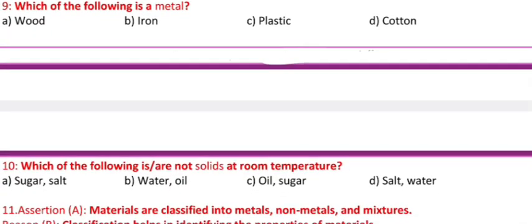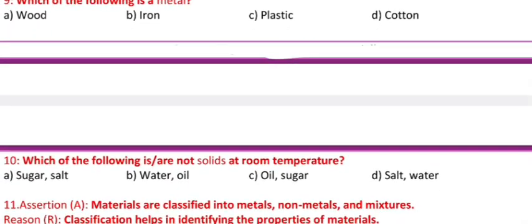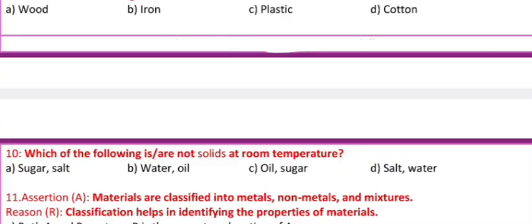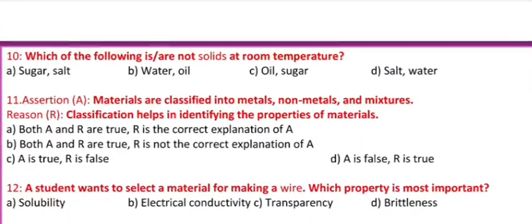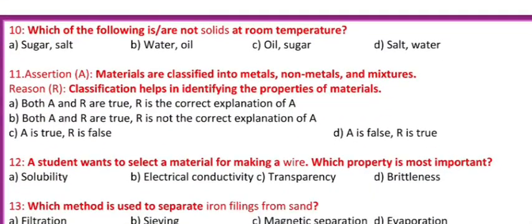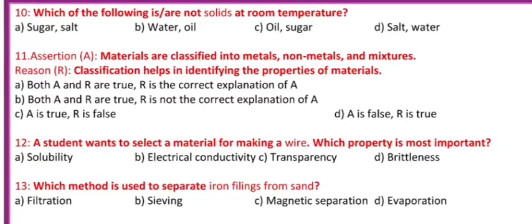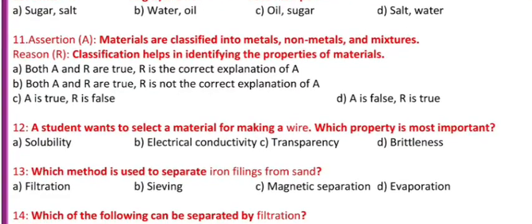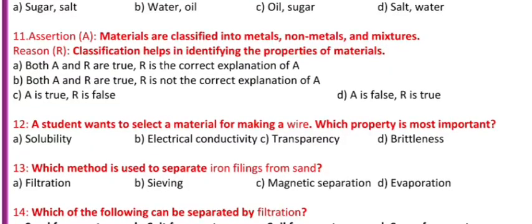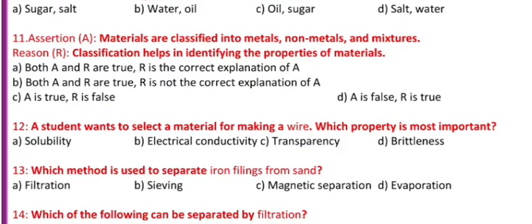Question 9: Which of the following is a metal? a) Wood, b) Iron, c) Plastic, d) Cotton. Question 10: Which of the following is not solids at room temperature? a) Sugar, salt, b) Water and oil, c) Oil, sugar, d) Salt and water.